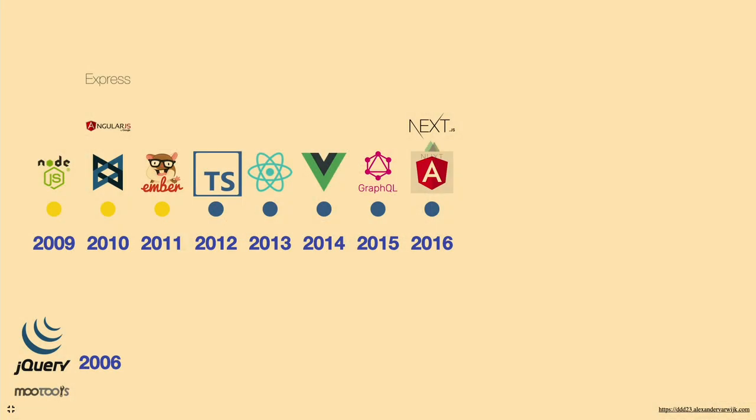In 2016, we saw a few more front-end frameworks: Angular 2.0 as a complete rewrite, Next.js as one of the first meta-frameworks taking React to the back-end for server-side rendering, Nuxt.js the day after as the Vue equivalent of Next.js, and Svelte, which tried to rethink data binding in the UI layer compared to React.